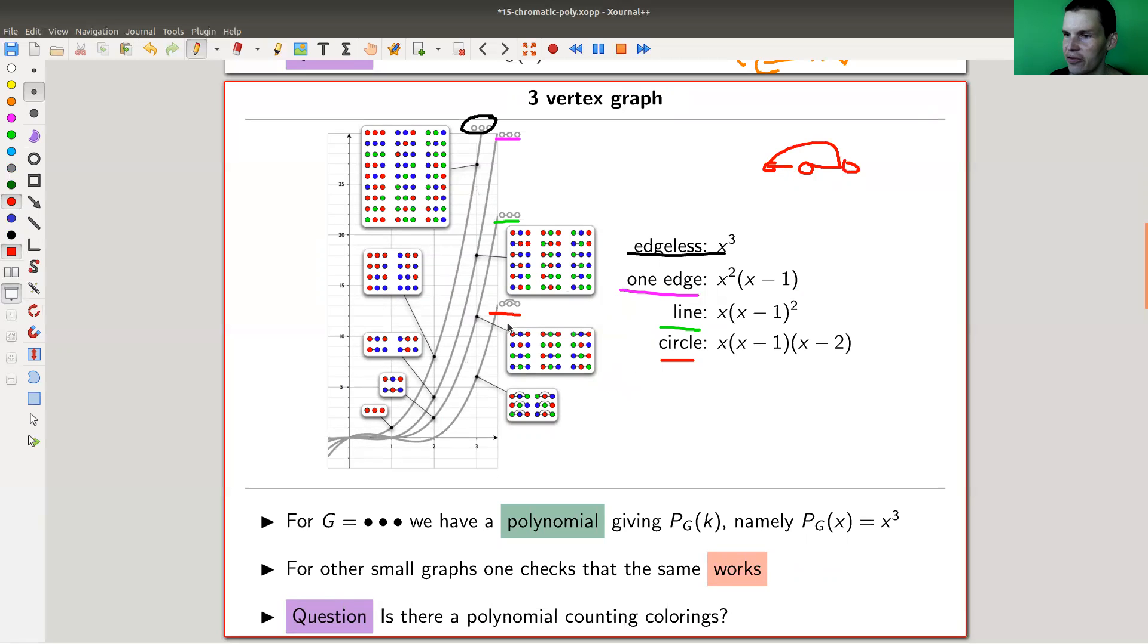Okay. And the number of colorings is illustrated here. So for the, let me just do it. For the non-edge graph, I can just color everything red, I guess, because there's no edge. Doesn't matter. So we have one coloring here.